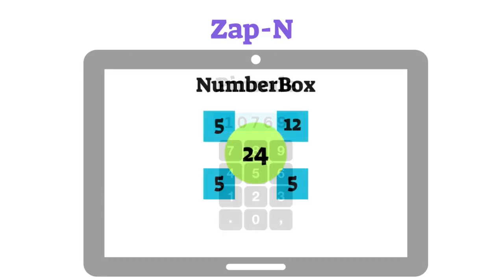Number Box is another cognitive game that measures mathematical skill. It is based on the famous 24 game where you manipulate four integers so that the result is the number in the middle.